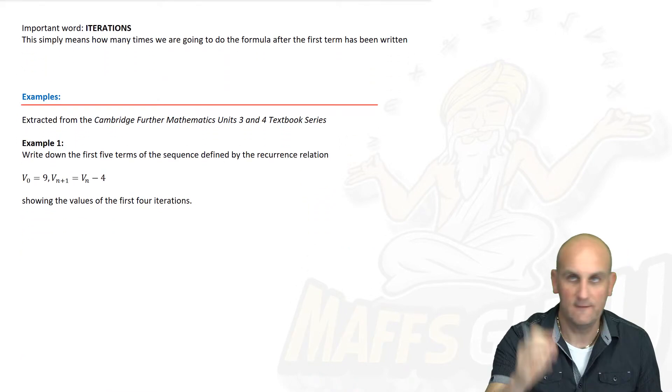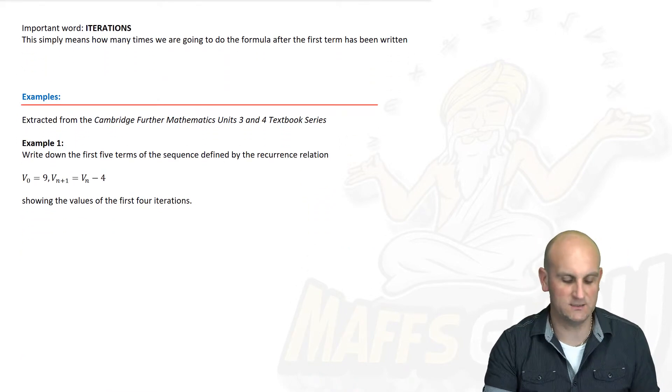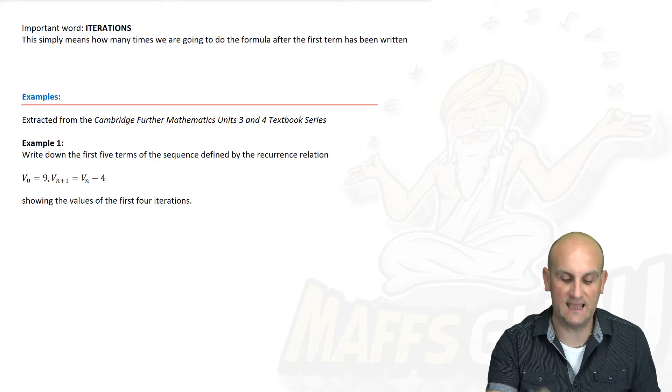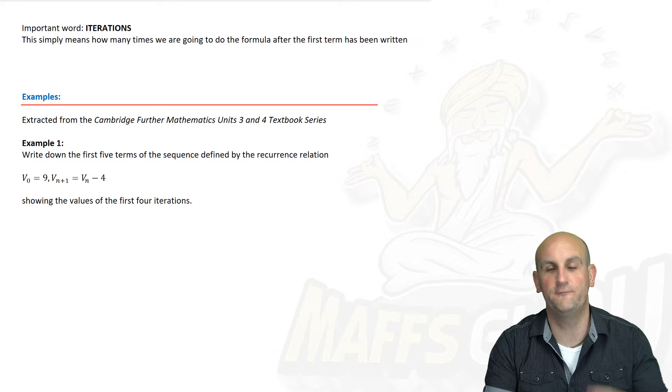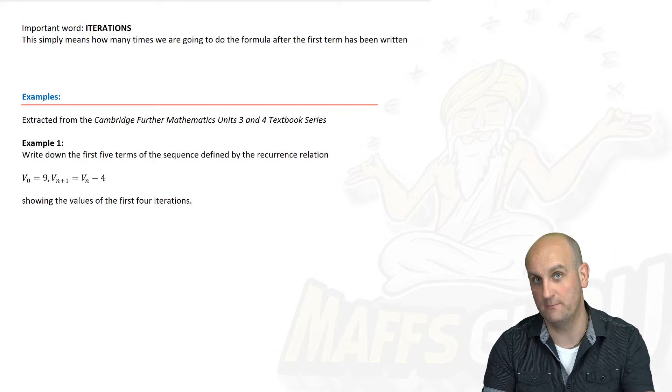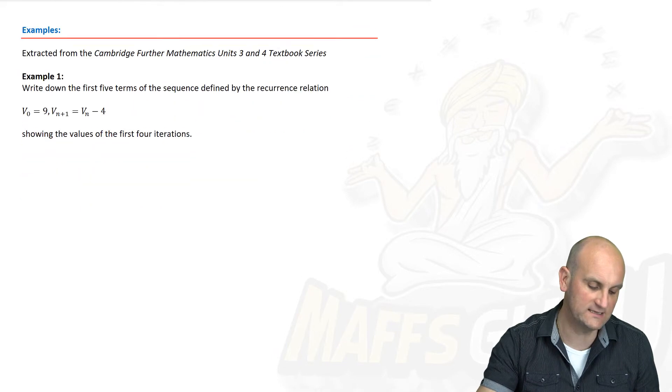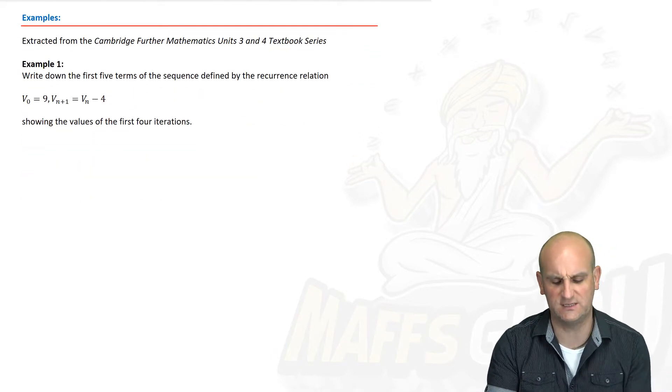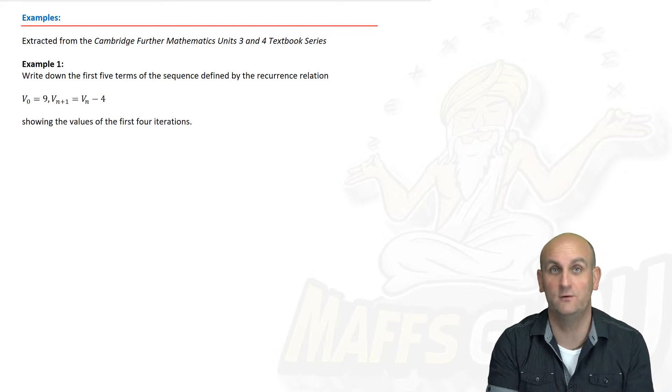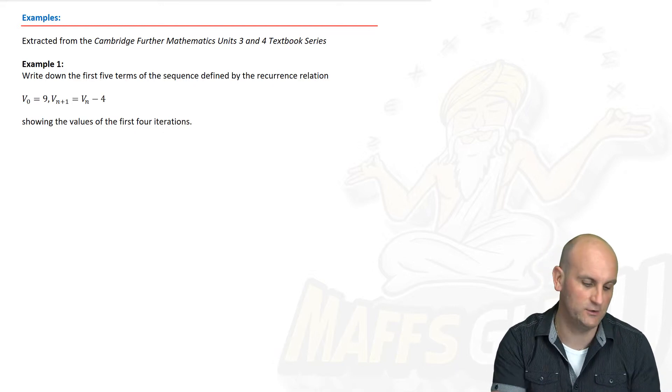Now, iterations. Barry, once again, is trying to make us a little bit confused. It means how many times we are going to do the formula to get from the first term. So, if you do 4 iterations, that means you're going to end up with 5 numbers. Just remember that. Alright, here's some examples extracted from the Cambridge Further Mathematics Units 3 and 4 Textbook Series. Thank you very much, Cambridge, for allowing me to use your examples. I cannot thank you enough. Greatly, greatly appreciated. You guys rock!